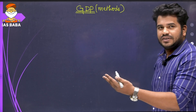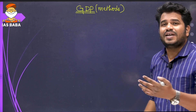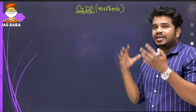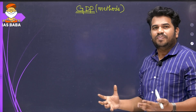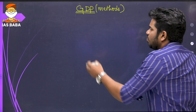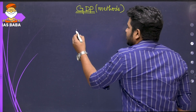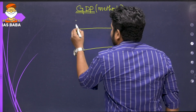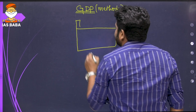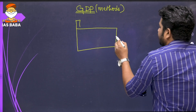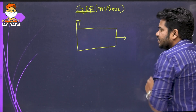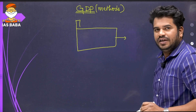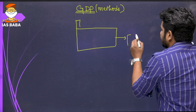Now, I am giving you an illustration as to how to make this concept more simple. We know that GDP can be calculated by three methods. Let us assume that a factory is making a shirt.